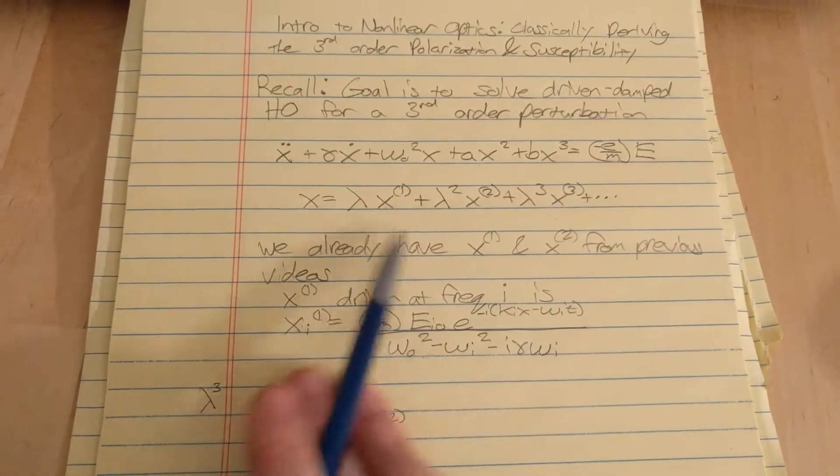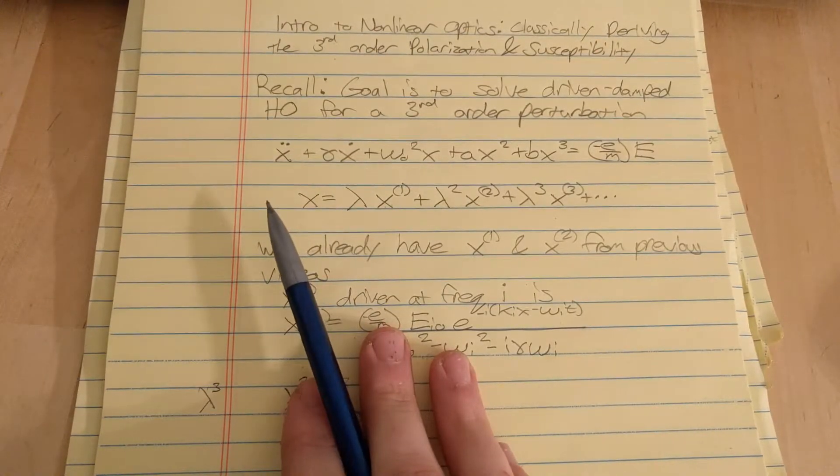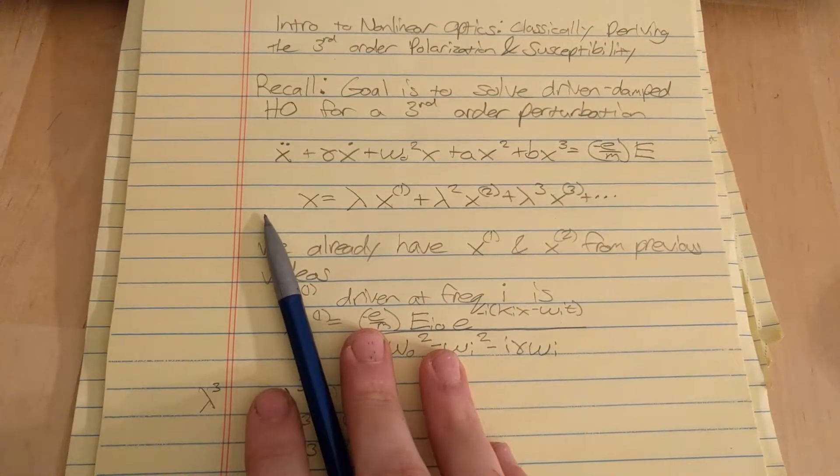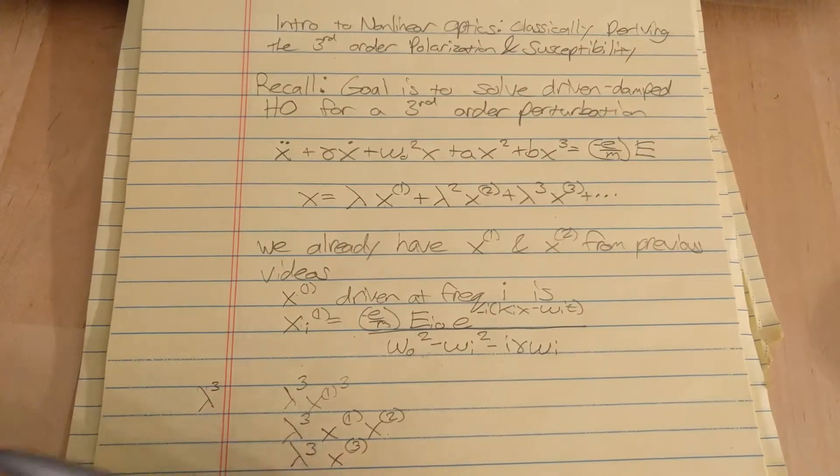in this equation we're going to assume that the constant a is zero. And this corresponds to just assuming we have a non-centrosymmetric material that the electric field is incident on.